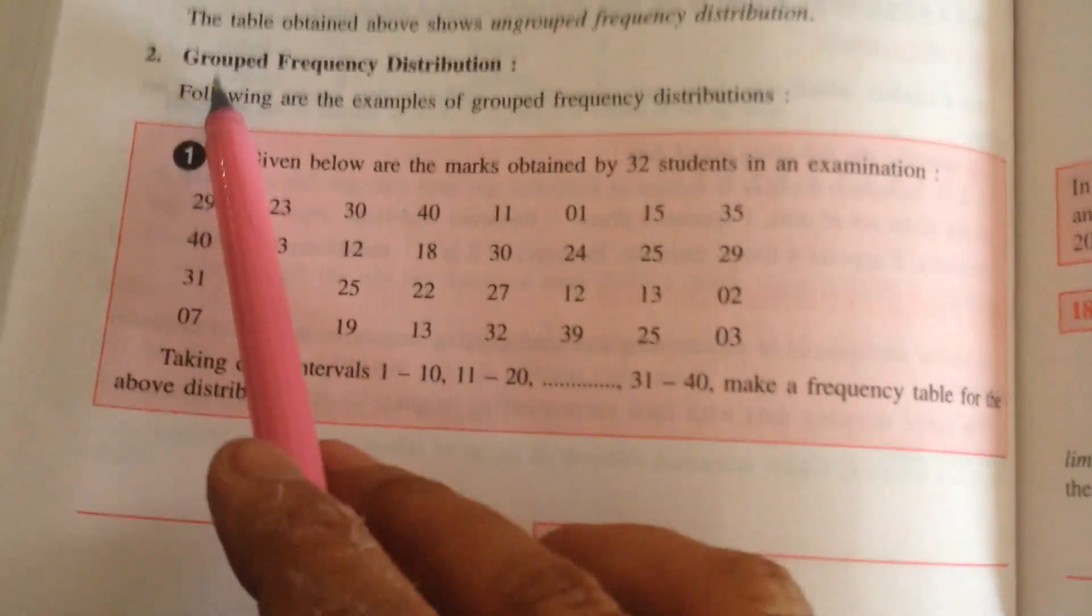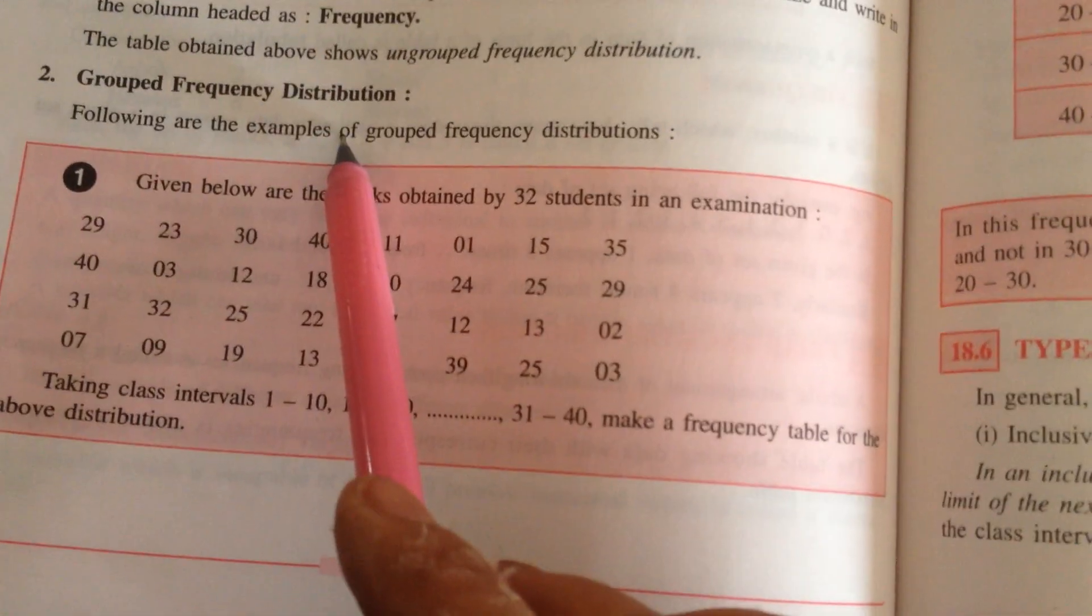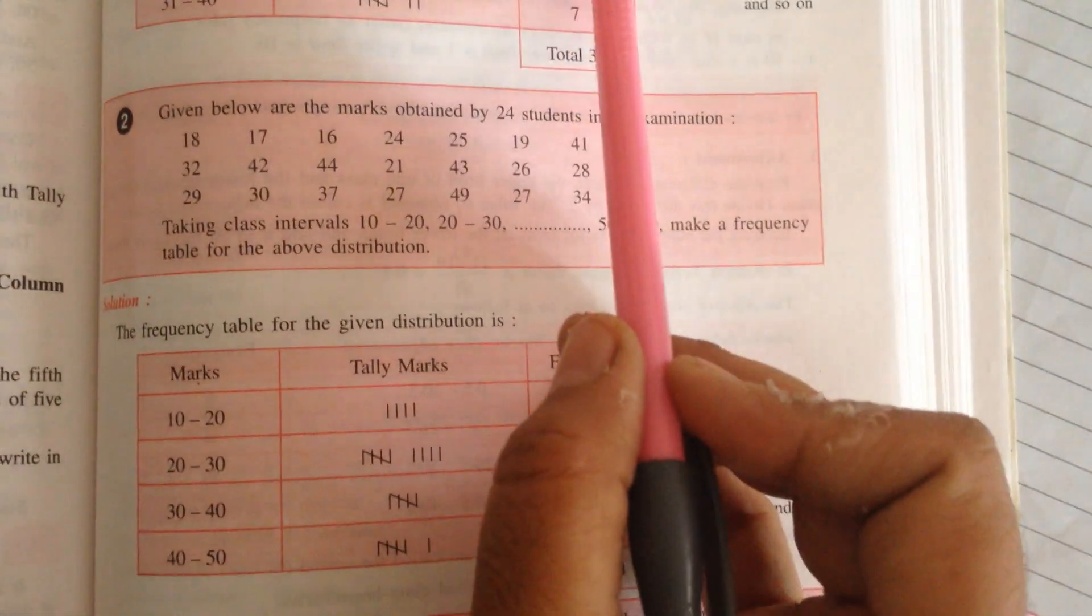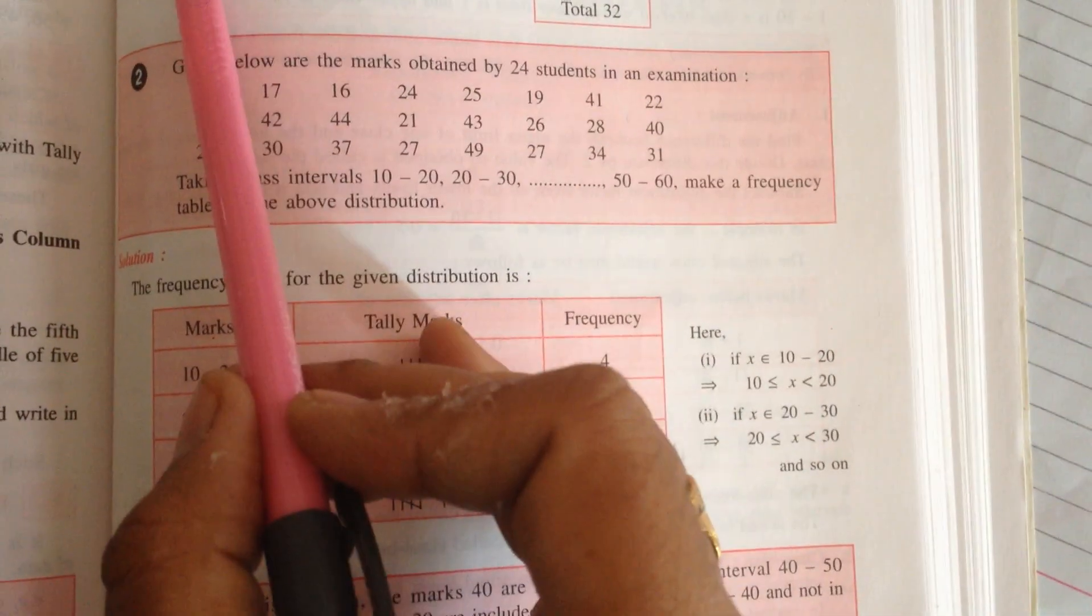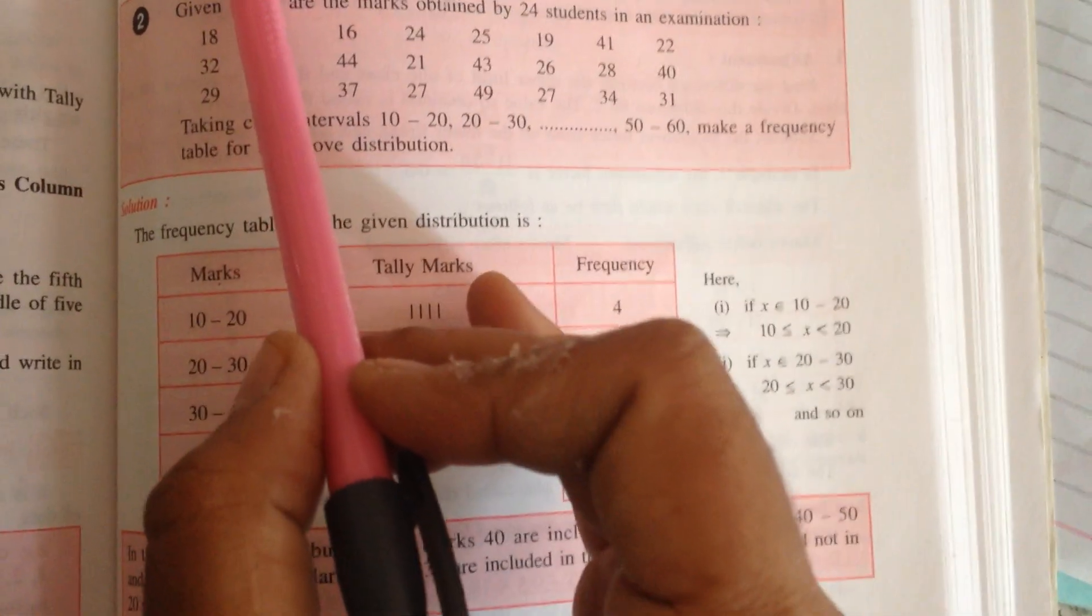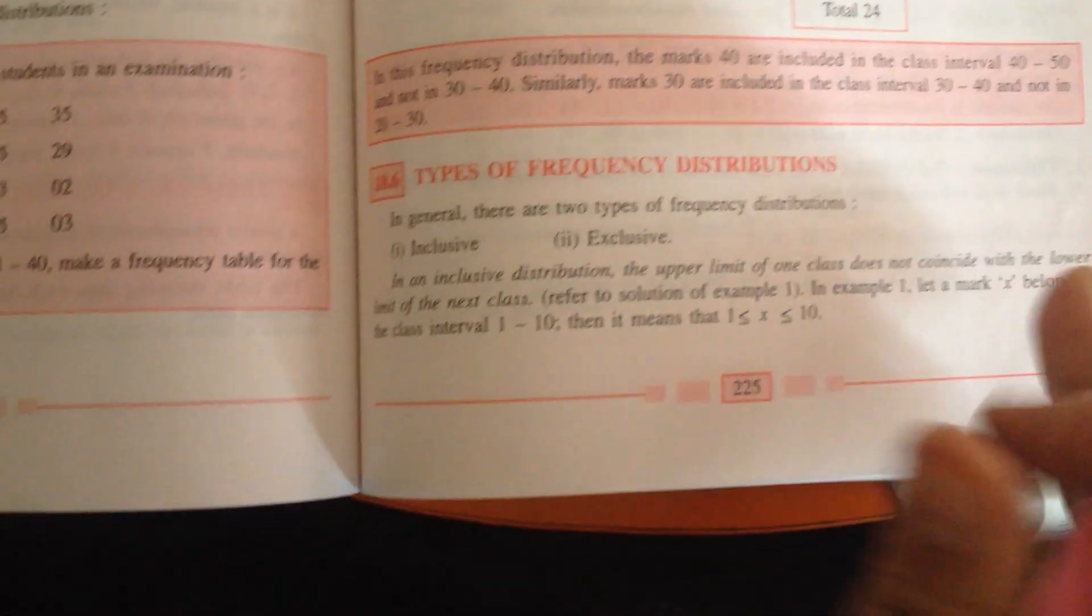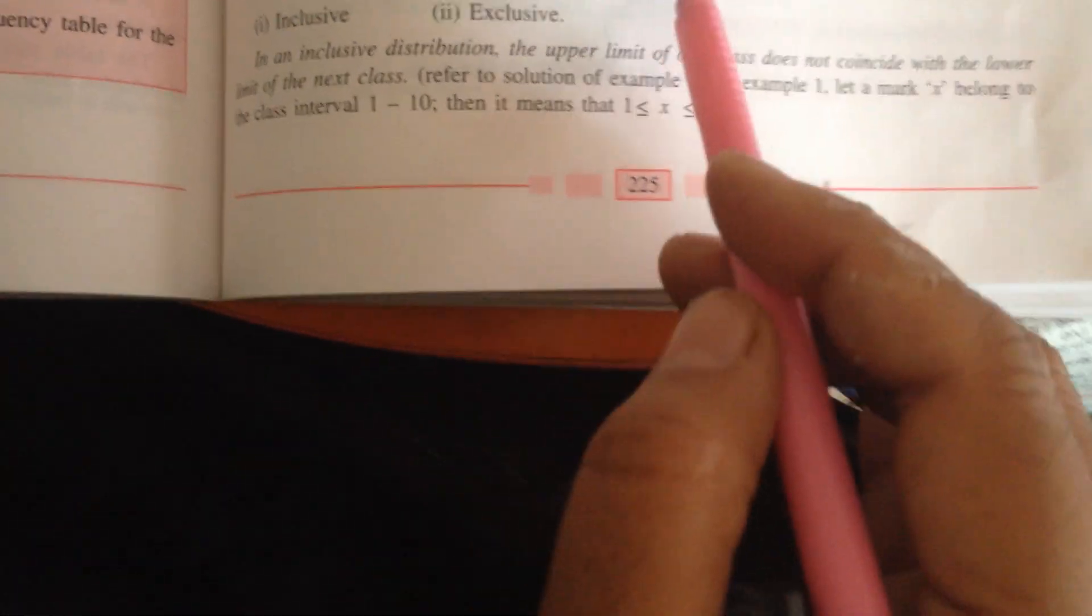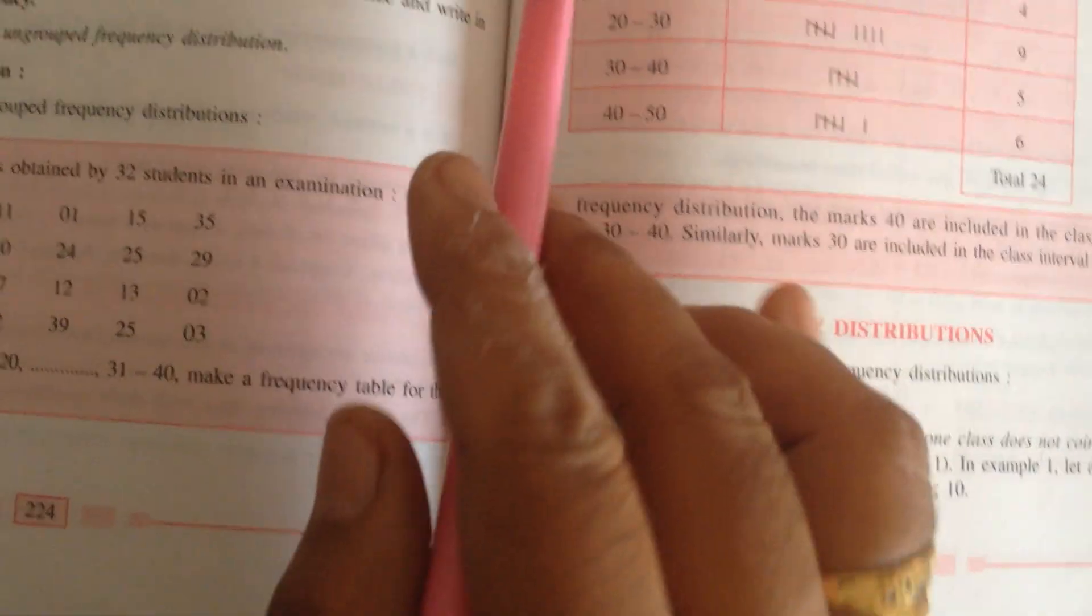This is known as grouped frequency distribution. Types of frequency distribution.